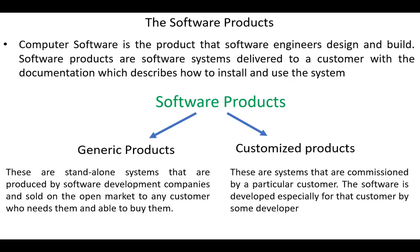Customized products are commissioned by a particular customer; the software is developed specially for that customer by some developer. In brief, generic products are universal software produced for the open market, while custom software is a unique solution developed for specific customers.